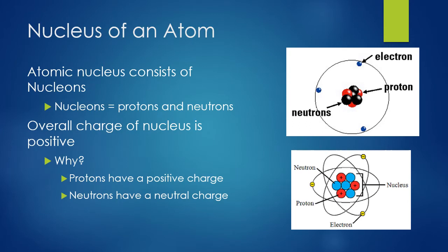Let's look more closely at the nucleus of an atom. The atomic nucleus contains nucleons — nucleon is just another word for protons and neutrons together, because that's what's in the nucleus. The overall charge of the nucleus is positive, because protons have a positive charge and neutrons have a neutral charge. Due to this positively charged center, electrons are attracted to it — because opposites attract — and that's why they orbit around the nucleus.